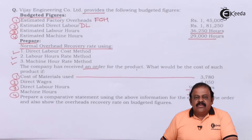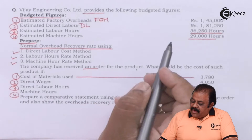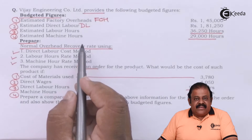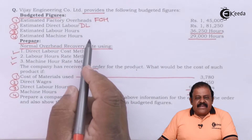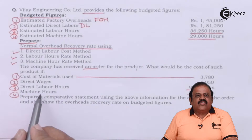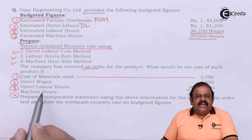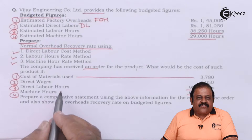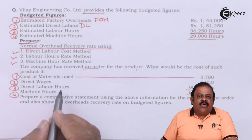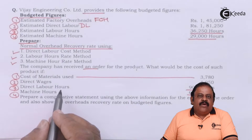Machine hours 600 hours. Here we are required to use the above data to get various rates and those rates we are required to apply in case of execution of order. There is a possibility that we may come across four alternative options of answers because there are four rates, and accordingly we will have four answers. So we are required to compare the absorption rates of overheads.